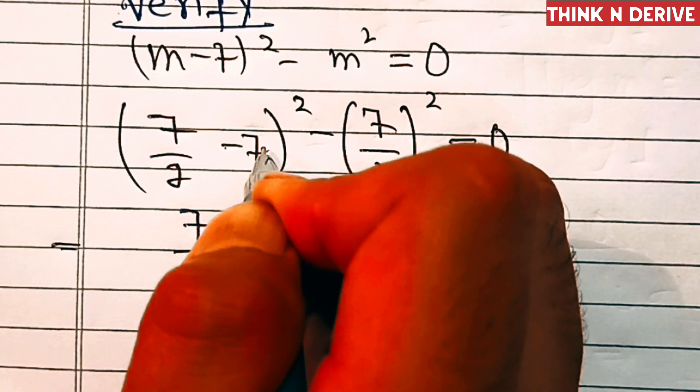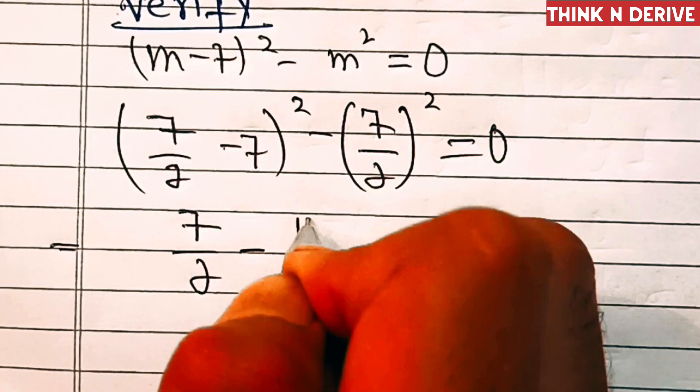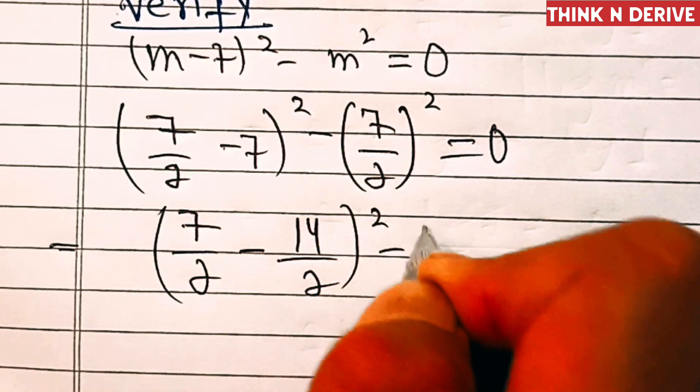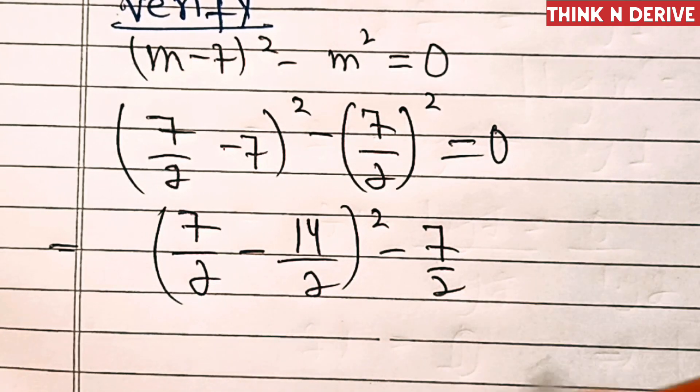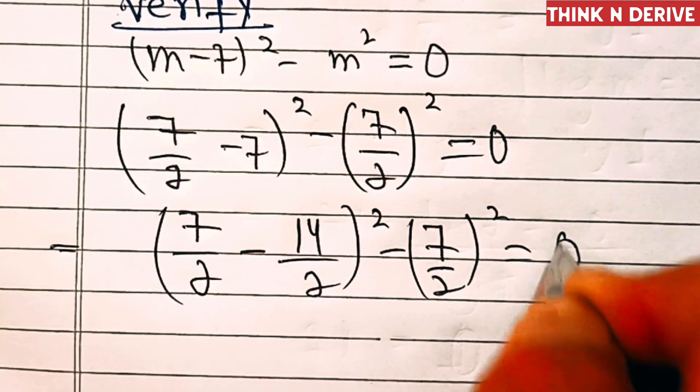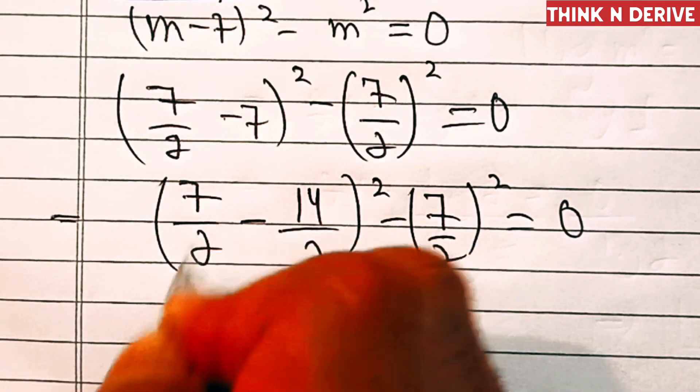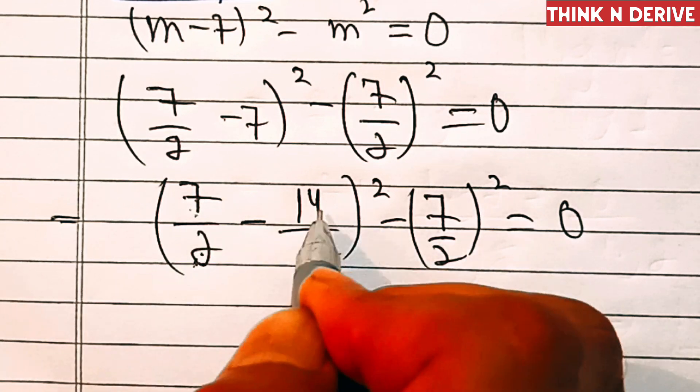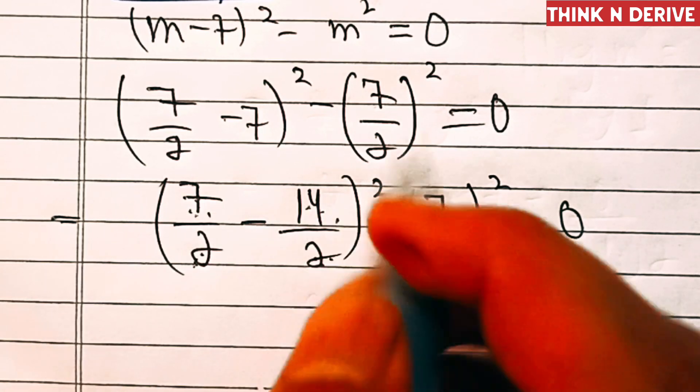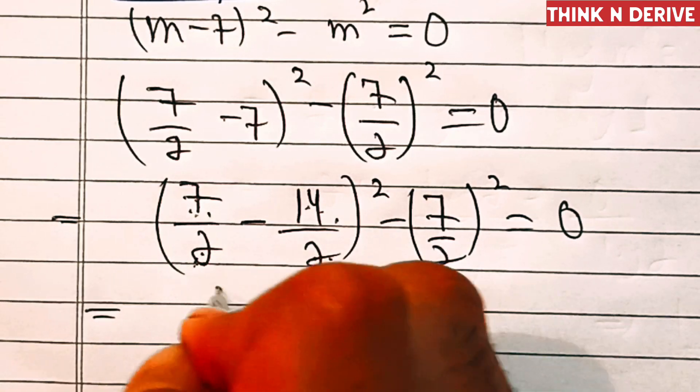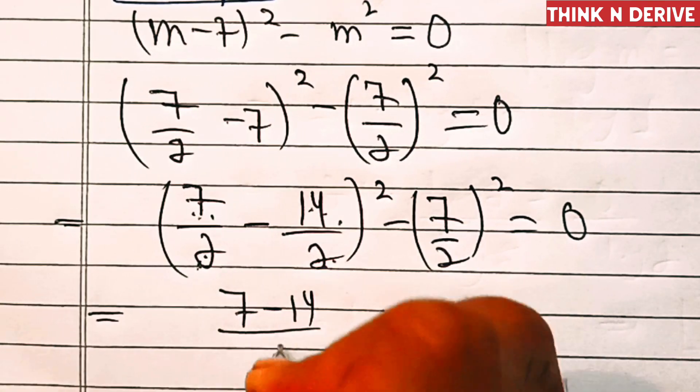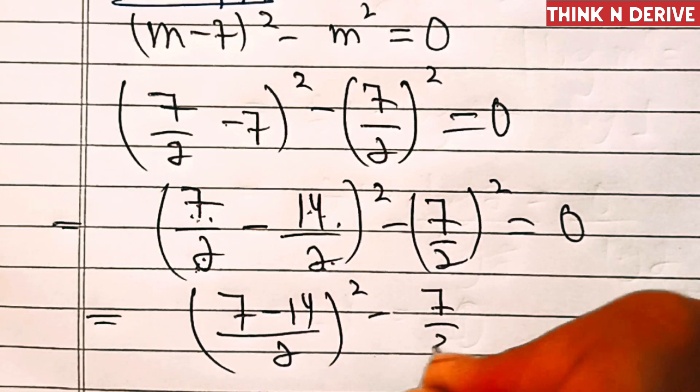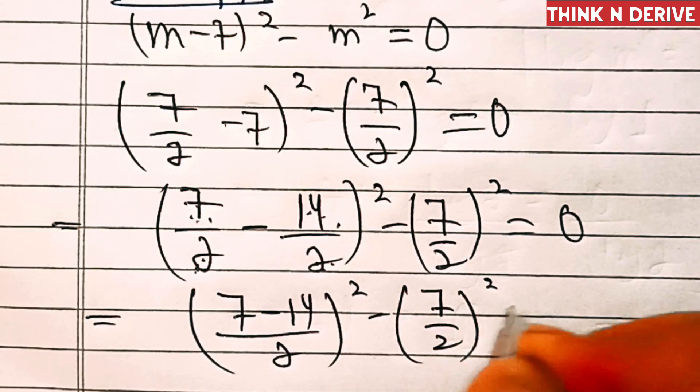Taking the LCM, this will become 7 minus 14 by 2 whole square minus 7 by 2 whole square equals zero. So now we'll separate these. This equals 7 minus 14 by 2 whole square equals negative 7 by 2 whole square.